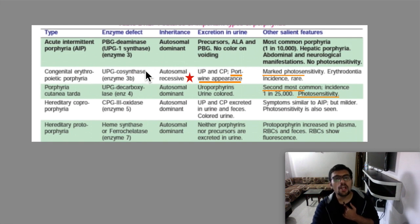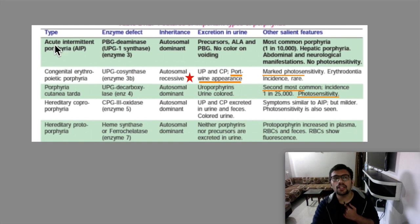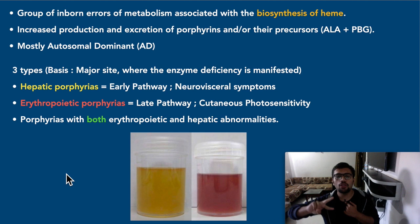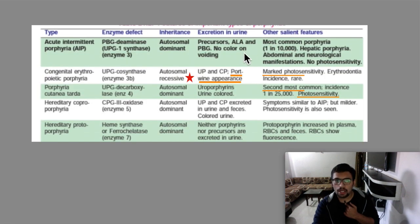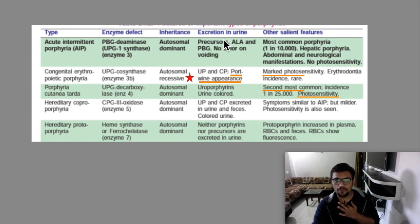For AIP (acute intermittent porphyria), the precursor that will increase is PBG, since the enzyme PBG deaminase is not working. There will be no coloration of urine on voiding in AIP — this is an acute condition. Porphyrin is not excreted in urine at that stage. In porphyrias generally, the name 'porphyria' comes from 'purple,' referring to discoloration of urine to a purple color — but in AIP there is no color change. In subsequent porphyrias there will be colored urine, such as port wine urine.